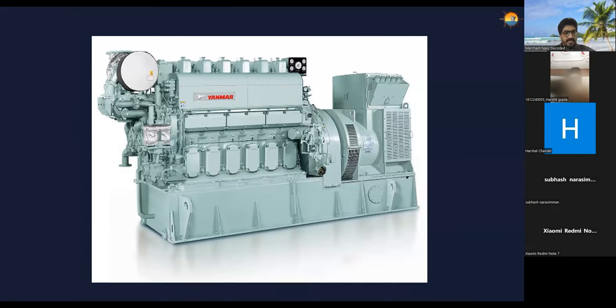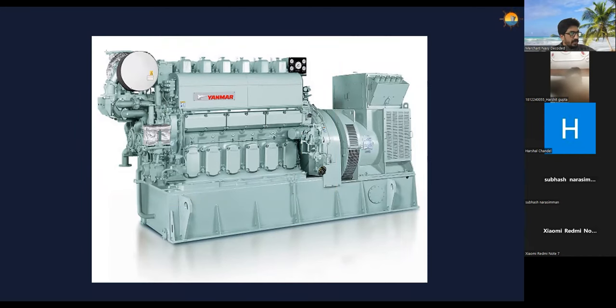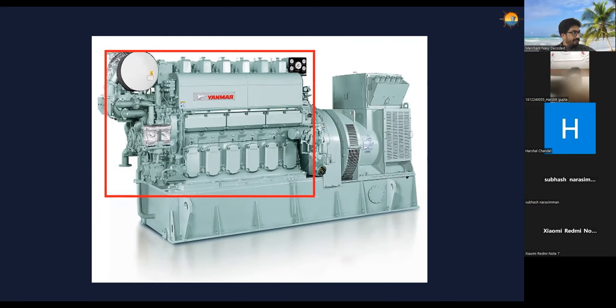So now in this, we have got an engine part. This is the engine part of it, we call this is a prime mover. This is four-stroke diesel engine, medium speed, RPM around 720 RPM.